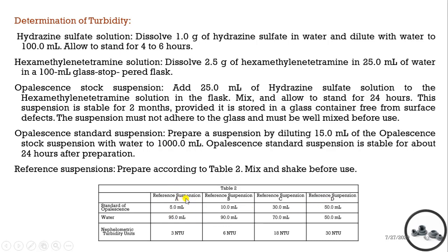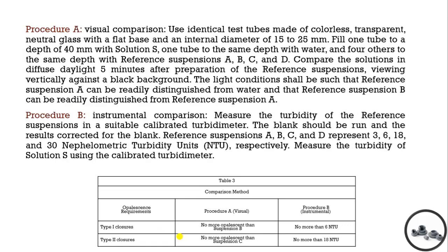For example, for reference suspension A, we take 5 ml of the opalescence standard and dilute it with 95 ml of water. We measure its turbidity in a nephelometer and it should be 3 Nephelometric Turbidity Units (NTU).